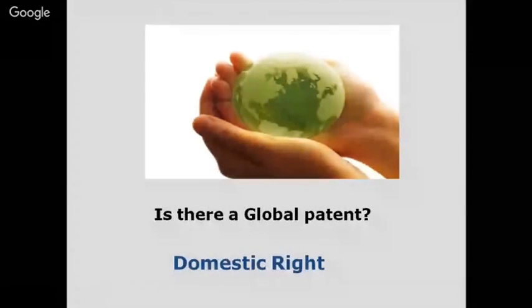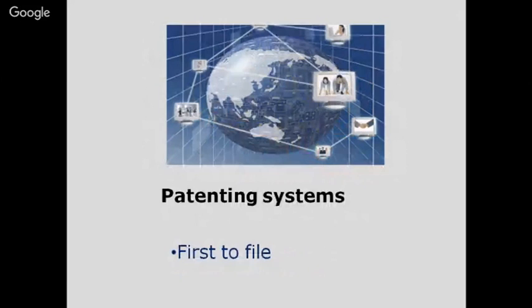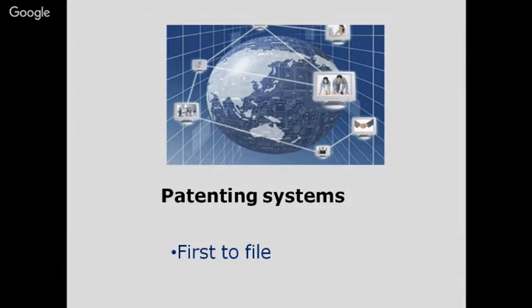A patent cannot be globally applied — it is restricted to a particular territory or nation and is a domestic right. The patent is granted to the person who is first to file for the innovation, even if research is being carried out simultaneously across various places in the world. It is very important to file early, and patents are granted by the national patent office.